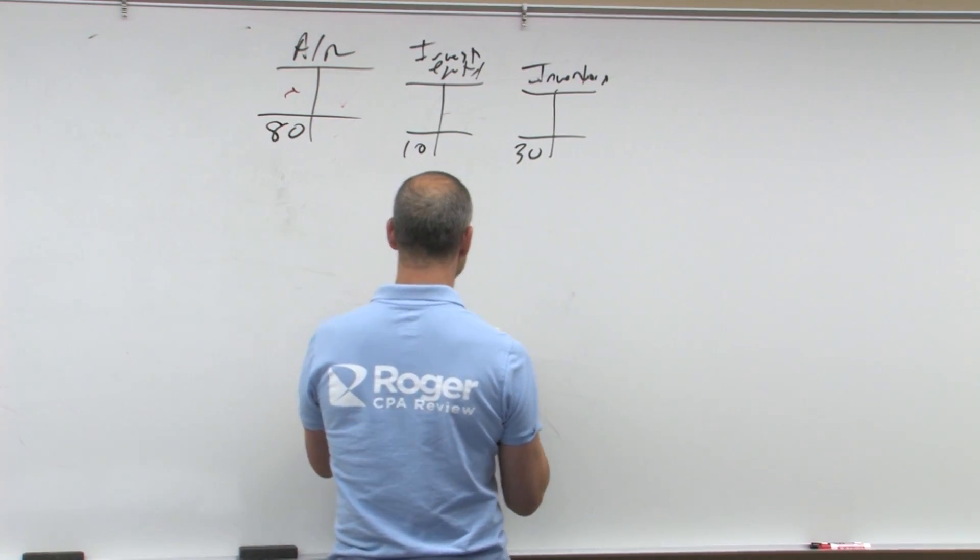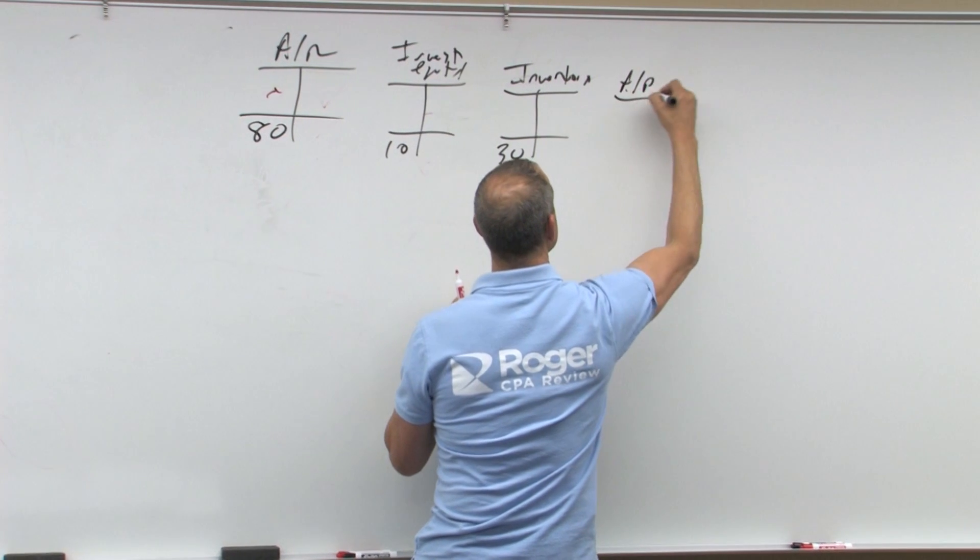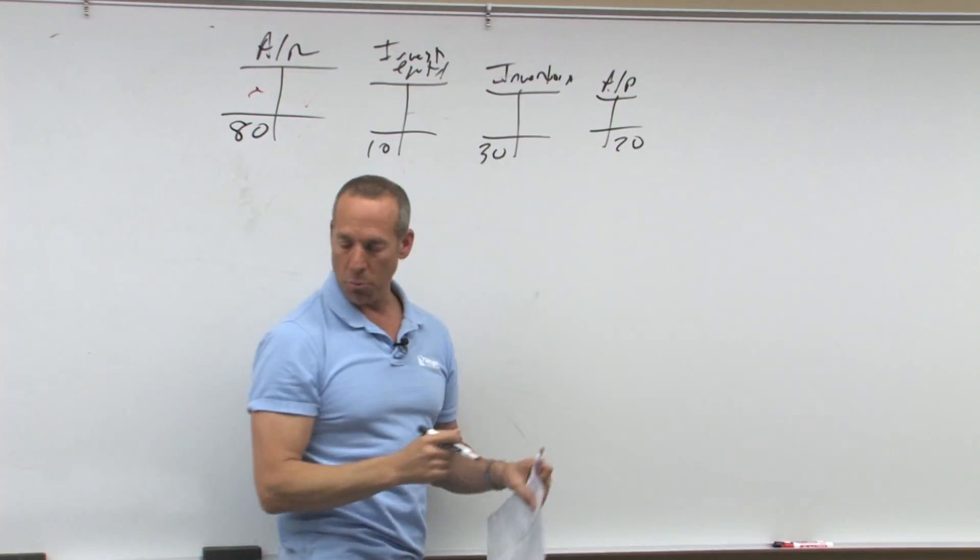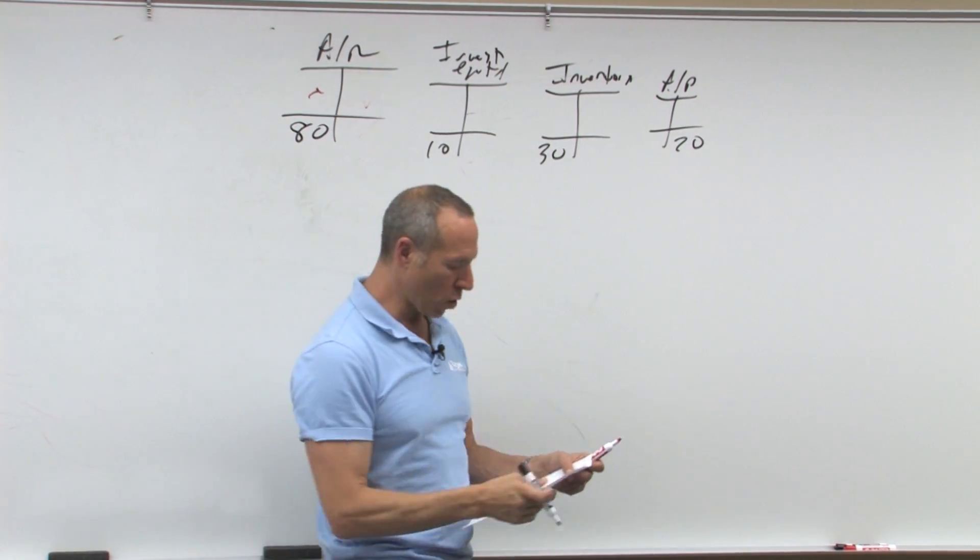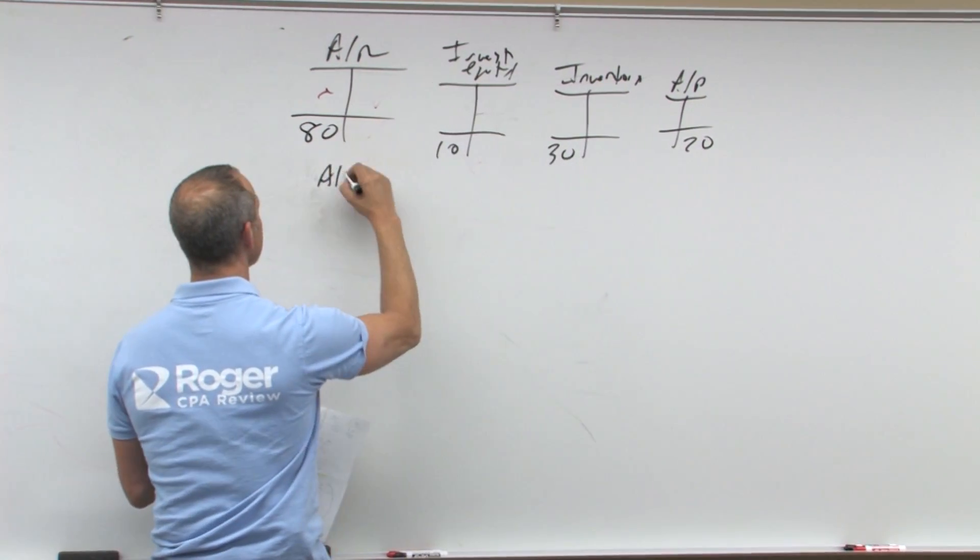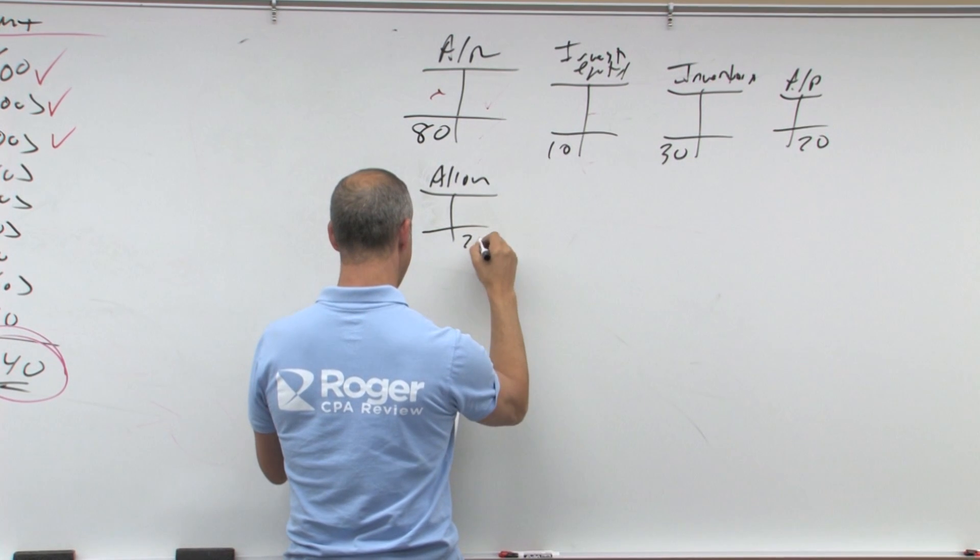We have accounts payable, which went up by 20. Now remember, if a liability goes up, that's a credit. Increase in allowance for uncollectable, so the allowance went up. That's also a credit of 20.